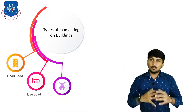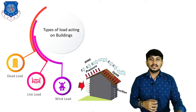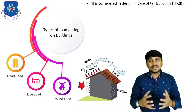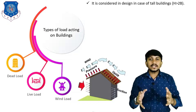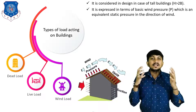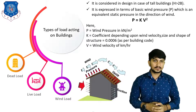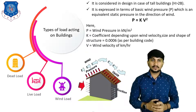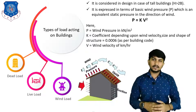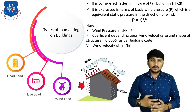Next is wind load. Wind load acts differently on different buildings. It is calculated based on IS 875 Part 3. It is considered in design for tall buildings having height greater than 2 times the width of the building. It is expressed in terms of basic wind pressure, which is the equivalent static pressure in the direction of wind. It is calculated by P = K × V², where P is wind pressure in kN/m². K is a coefficient depending on wind velocity, size, and shape of the structure, and is typically taken as 0.6 as per IS 875 Part 3.